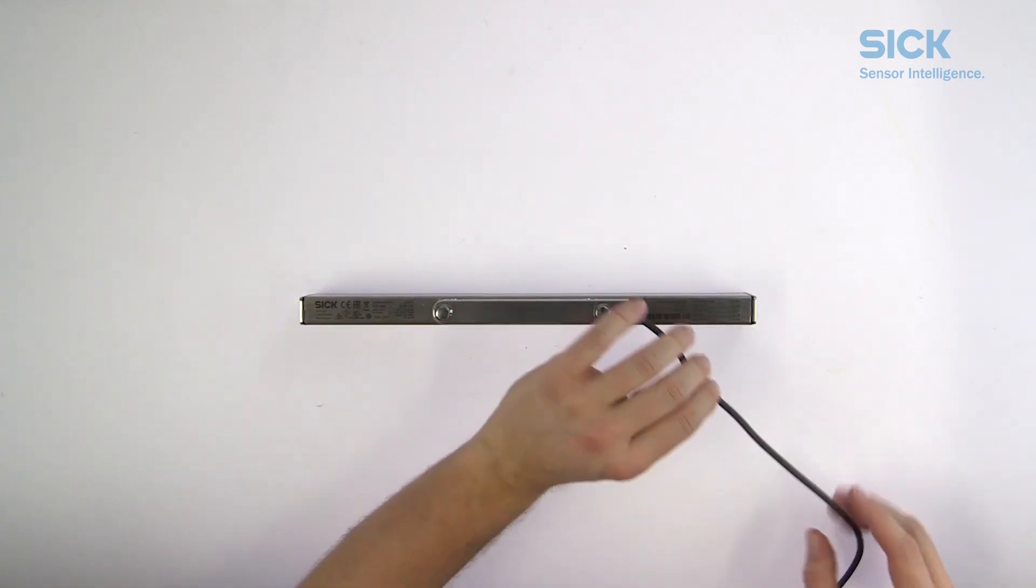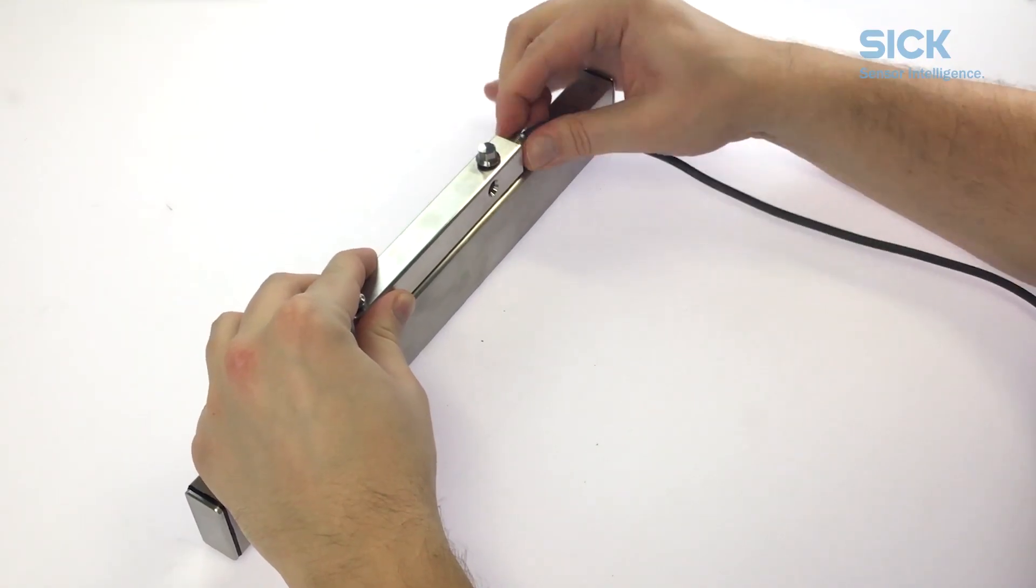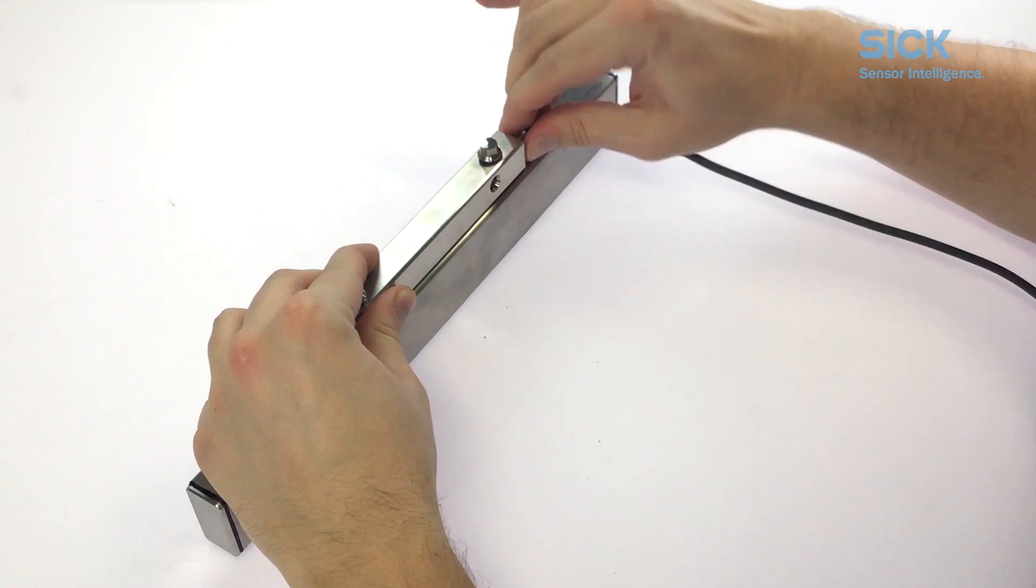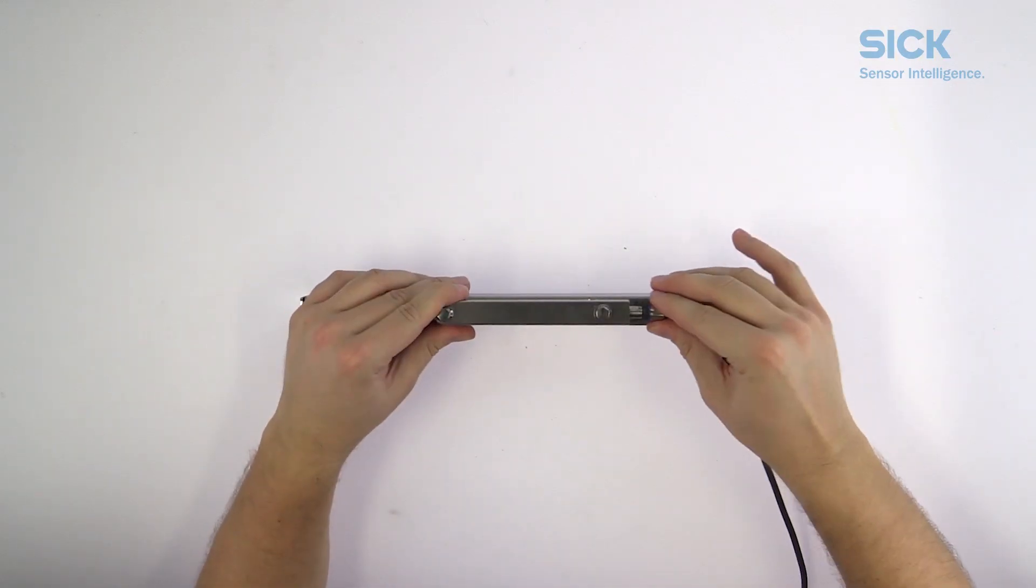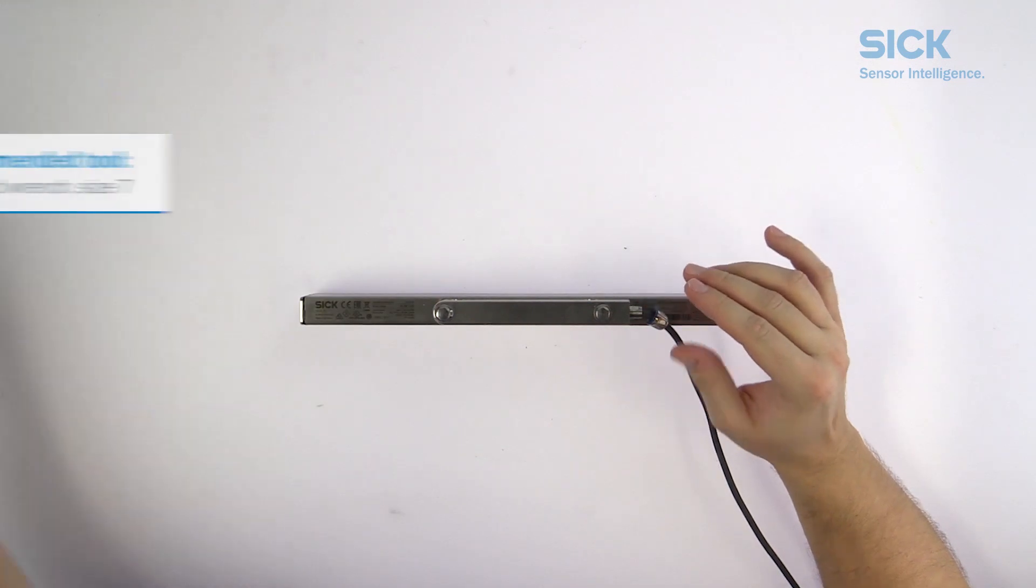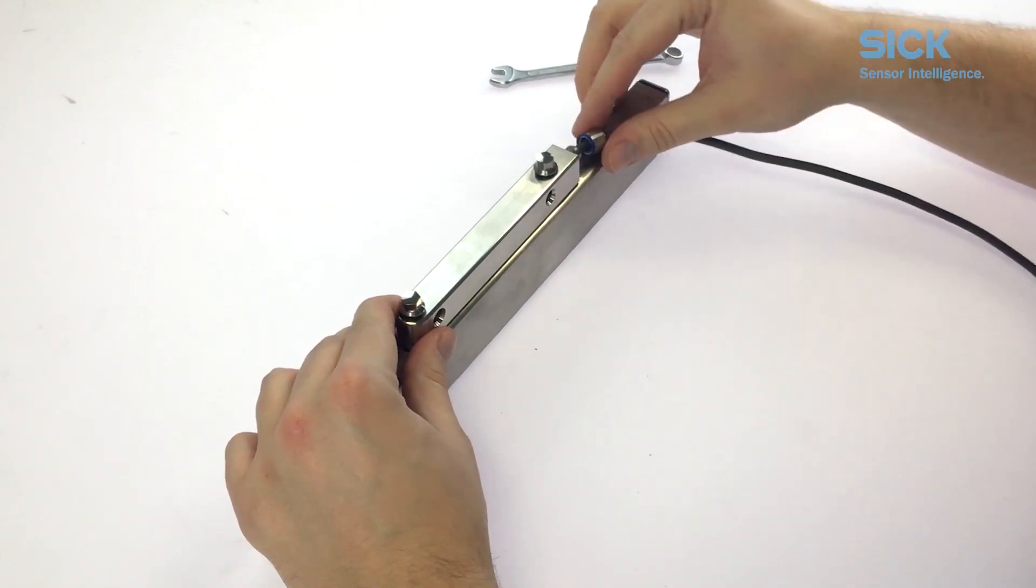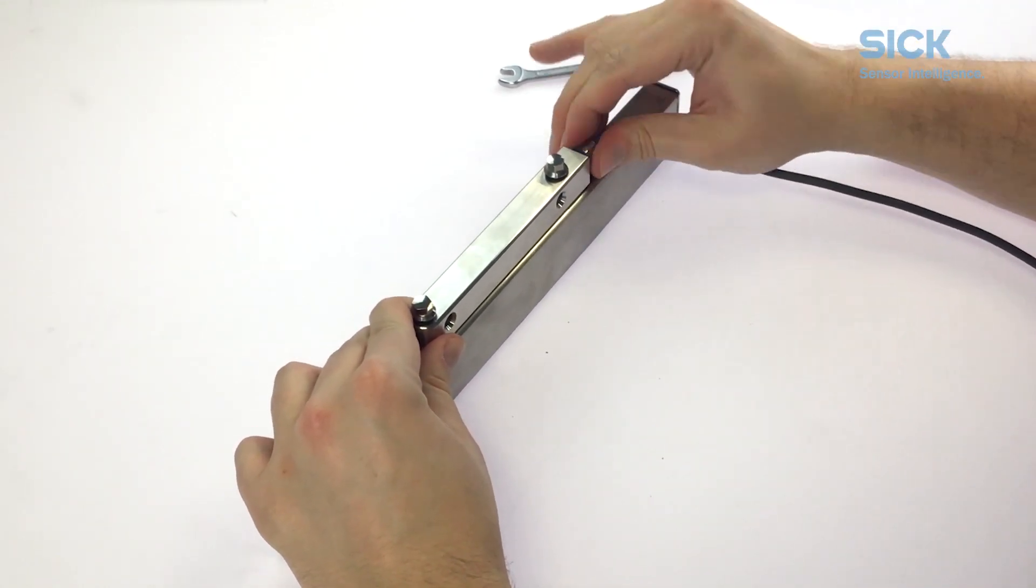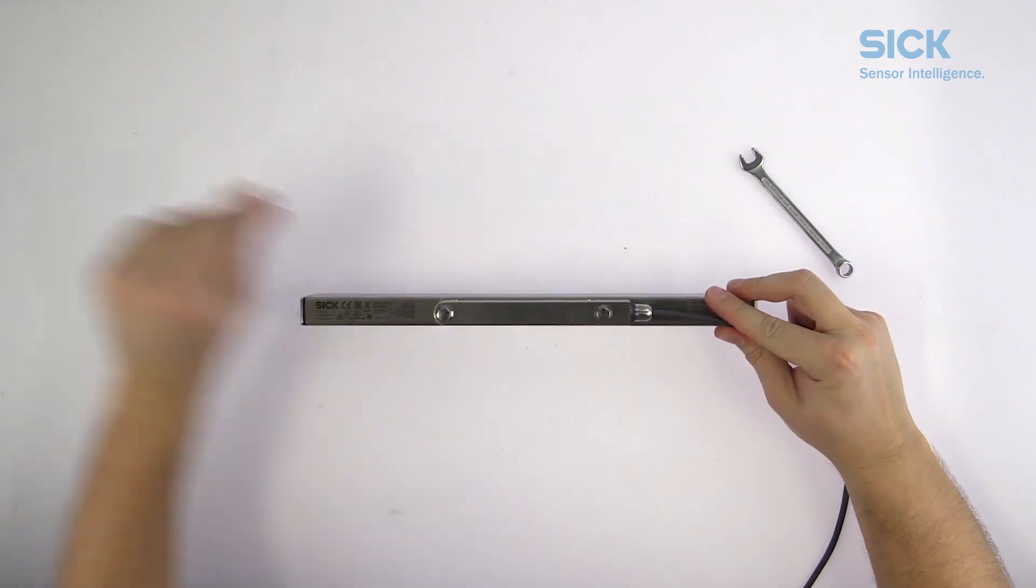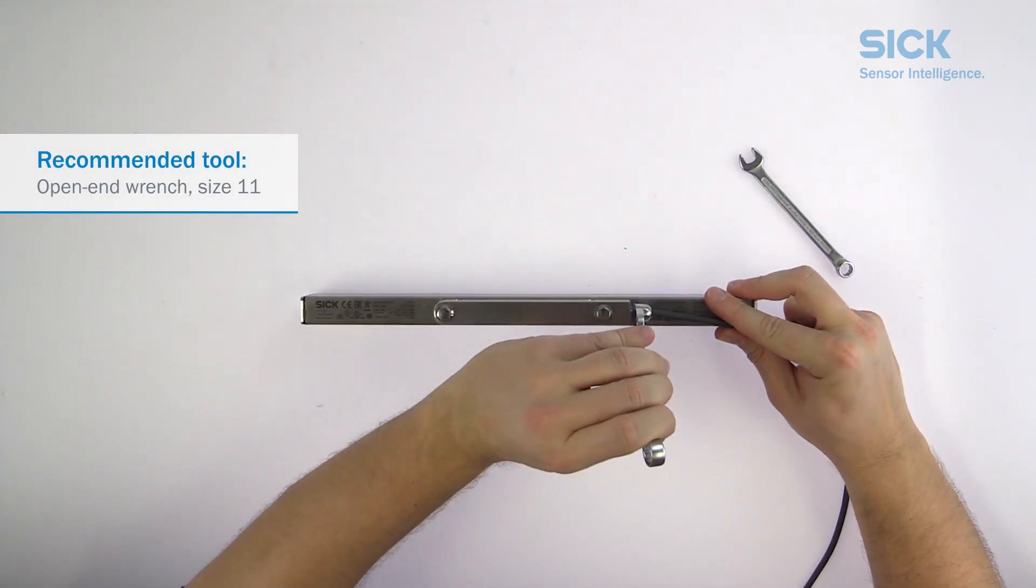First fix the little conduit to the bracket base. Then tighten the counter part onto the cable gland conduit. Hold the cable so it won't twist and turn in the process.